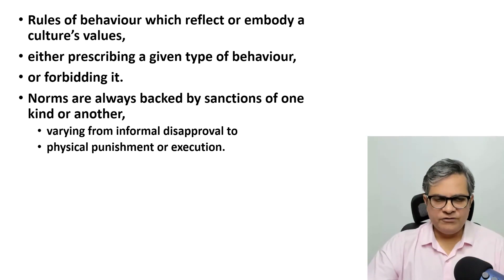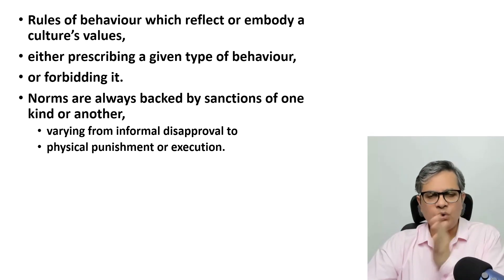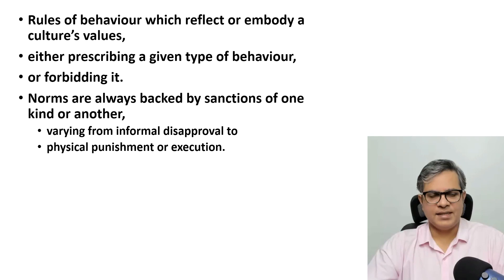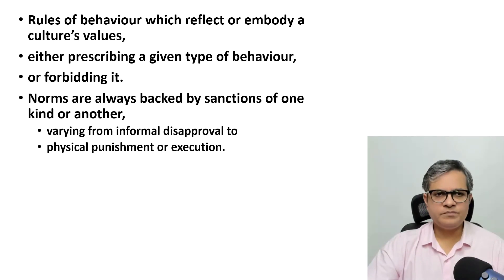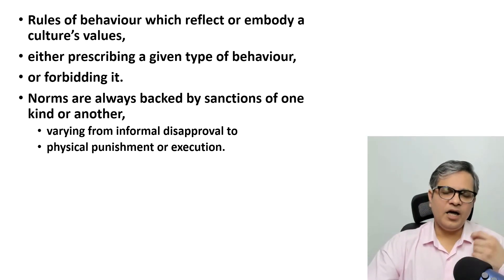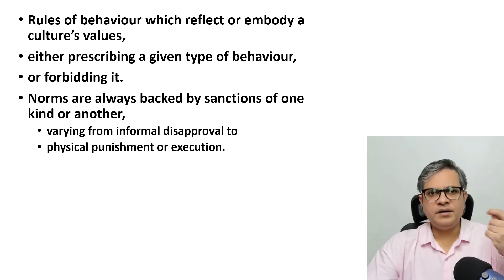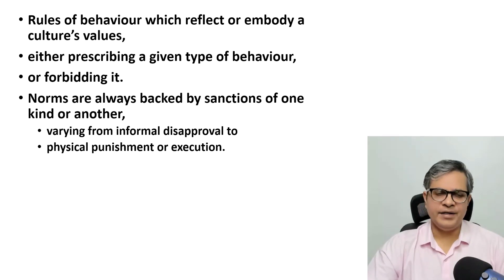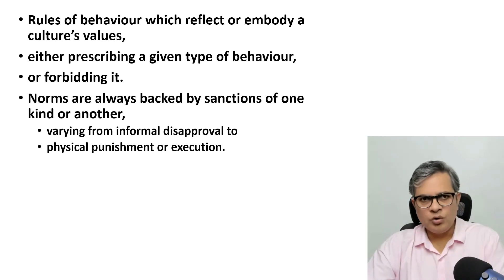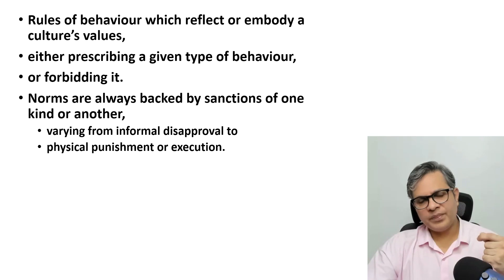The same definition of norms — I have now broken it into parts so that you understand how we break apart a particular definition and interpret it. Point number one: rules of behavior. Point number two: prescribing or forbidding. Point number three: informal disapproval or punishment. For example, if I walk in a park in certain dress which is too revealing for the society, I might not get punishment under the Indian Penal Code, but informal disapproval will be received from society.